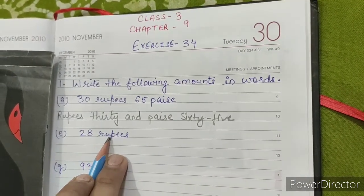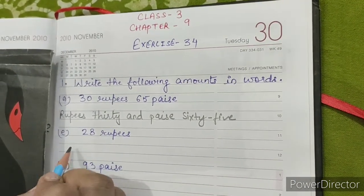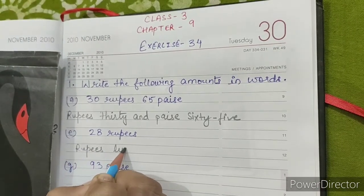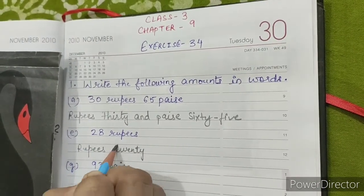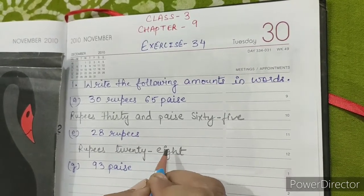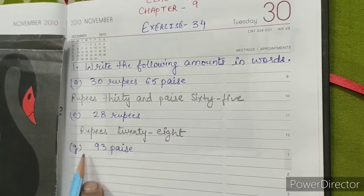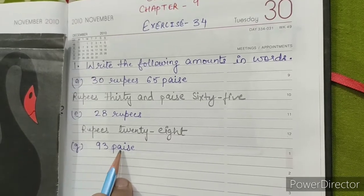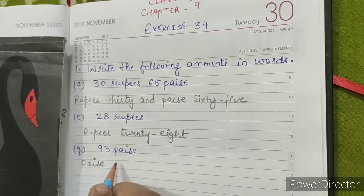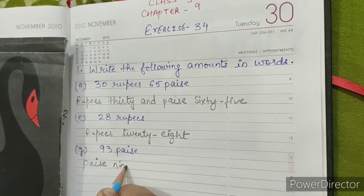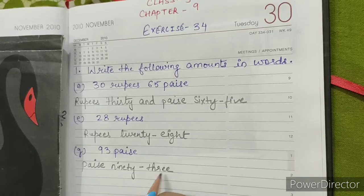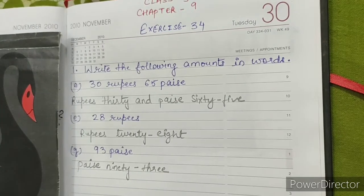E. 28 rupees and 93 paise. Rupees: twenty-eight, and paise: ninety-three paise.